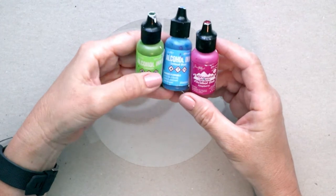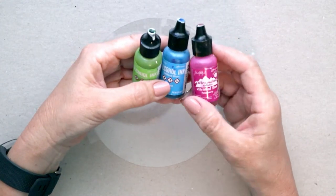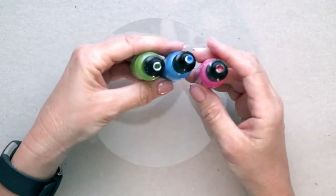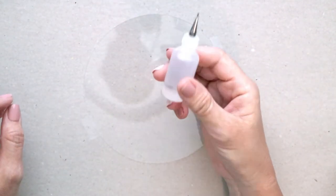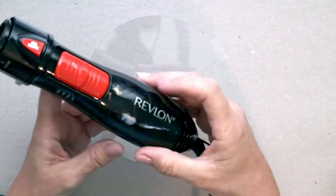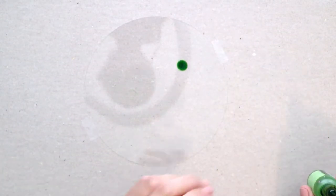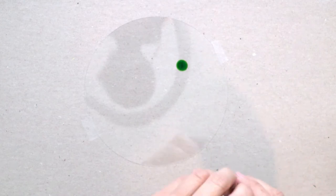For alcohol ink I'm using limeade, sailboat blue, and raspberry, but really you can use any colors you choose. And then I do have a little bottle with alcohol in it. To move the ink around I'm using this Revlon brush. I'm just going to add some alcohol ink to here, just let it dry, and then I'll add the alcohol to move it around.